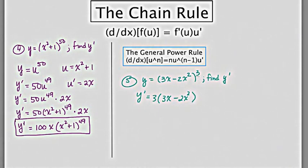drop the exponent by 1, and then multiply by the derivative of the inside, which in this case is 3 minus 4x.